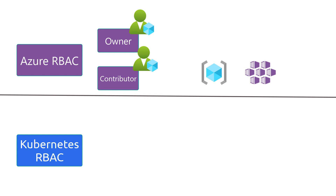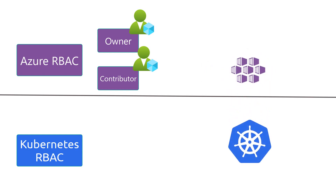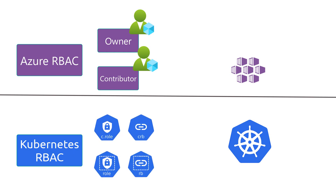AKS is a managed Kubernetes offering, so underneath AKS we still have a Kubernetes cluster running. Kubernetes itself also has its own role-based access control, which can be configured using role bindings or cluster role bindings within a cluster. In the context of an AKS cluster, Azure role-based access control has two additional roles: the Azure Kubernetes admin role and the Azure Kubernetes user role.